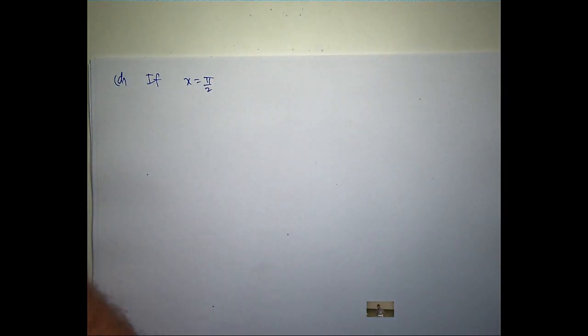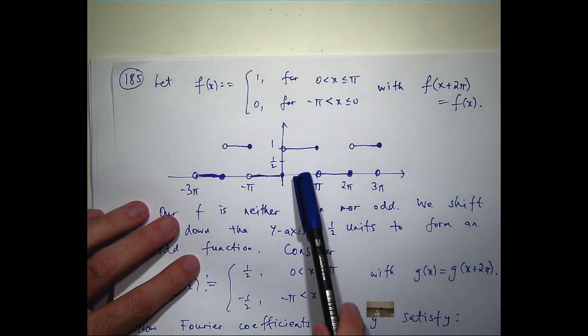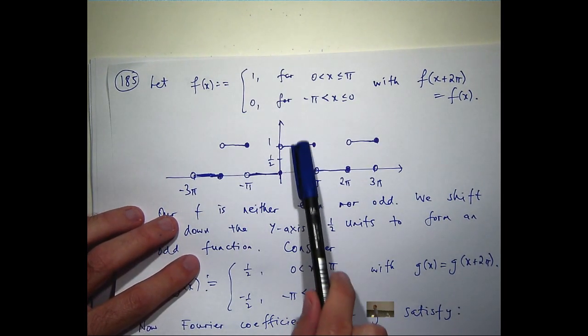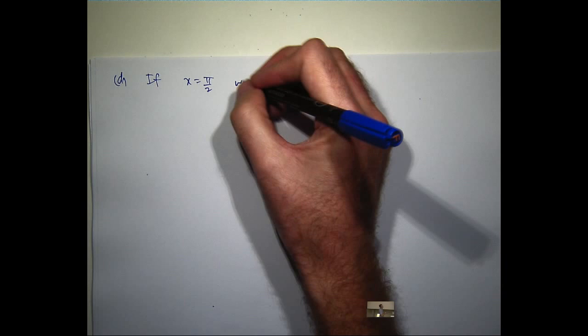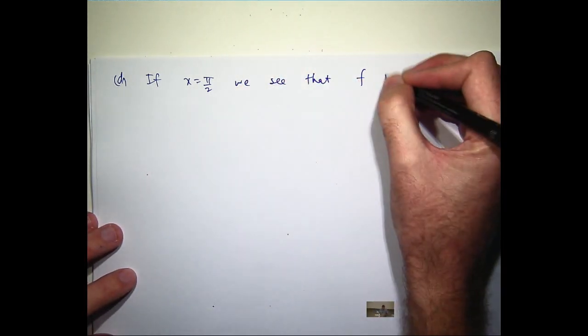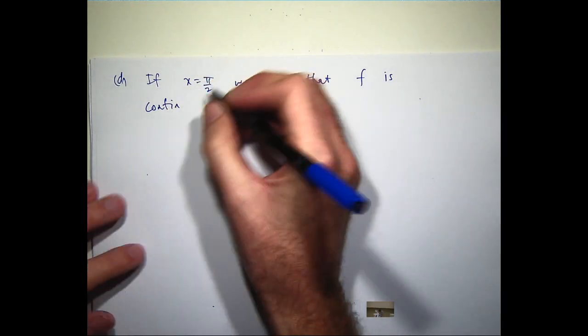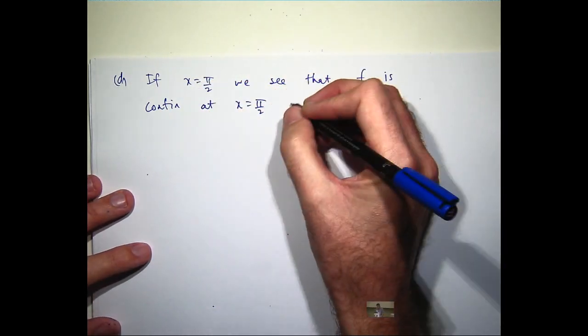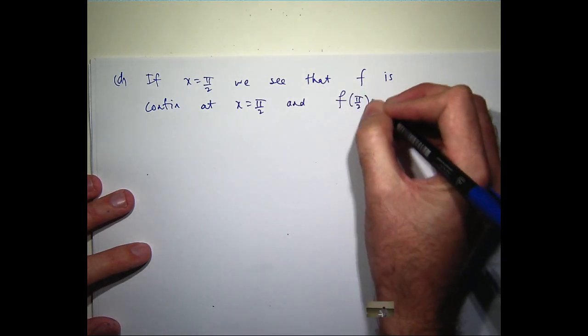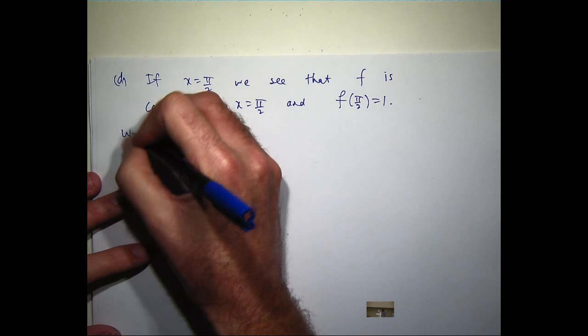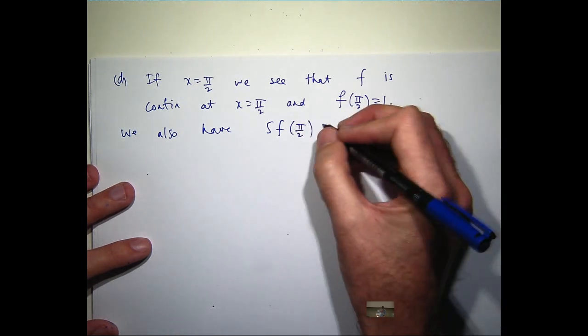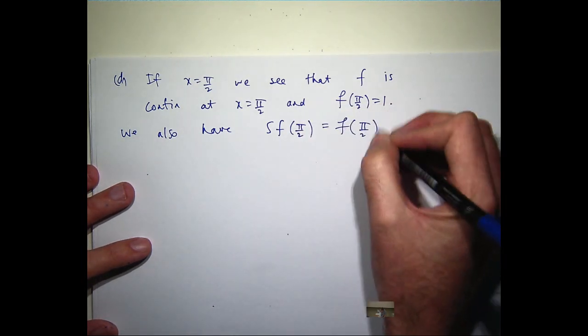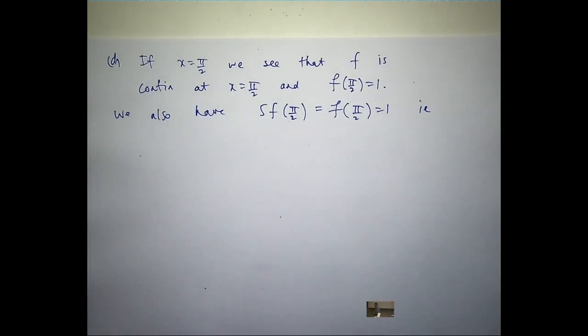Let's have a look at our original function. Let's say x equals pi on 2 which is here. What's the value of our original function at x equals pi on 2? It's 1. And in particular, the function is continuous at x equals pi on 2. So f of pi on 2 is just 1. And because we have continuity, we know that the value of the Fourier series at pi on 2 is equal to the value of the function at pi on 2.